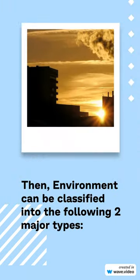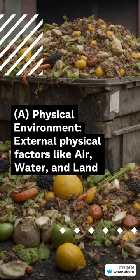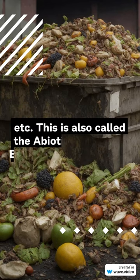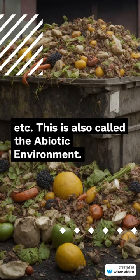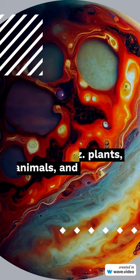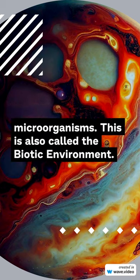Environment can be classified into the following two major types. First, the physical environment — external physical factors like air. This is also called the abiotic environment. Second, all living organisms around us, such as plants and microorganisms. This is also called the biotic environment.